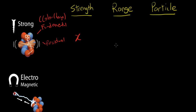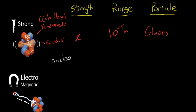The range of the strong force is about 10 to the negative 15 meters, which is about the diameter of a nucleus — just enough range to hold the nucleus together. The particle that mediates the strong force is known as the gluon, because it basically glues the nucleons together. Nucleons are basically protons and neutrons — any combination of protons and neutrons.